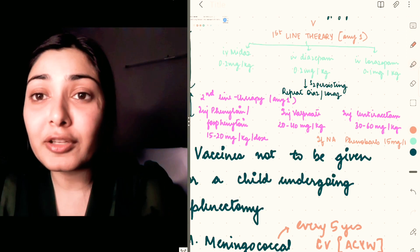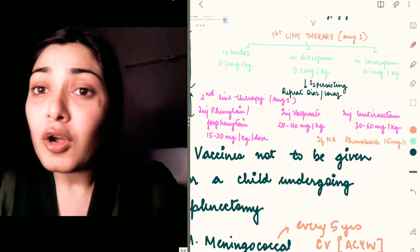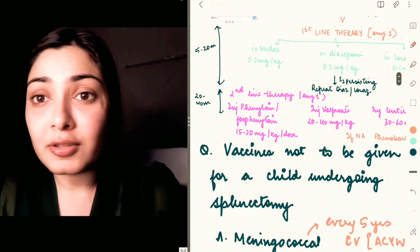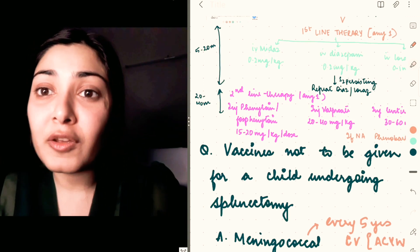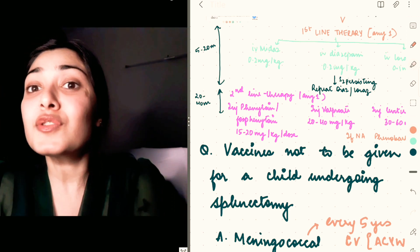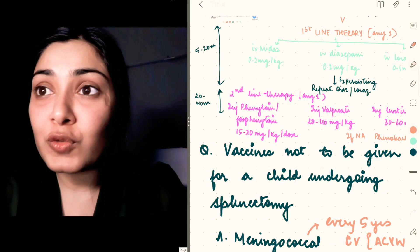This is the basic management. If seizures still persist, that comes under the third-line therapy. You can repeat any of the second-line agents if they were not used earlier, and lastly phenobarbital coma or midazolam infusion. Let's see how Ghai gives this flowchart, because that's what was asked in the exam—the sequence of drugs used in the management.